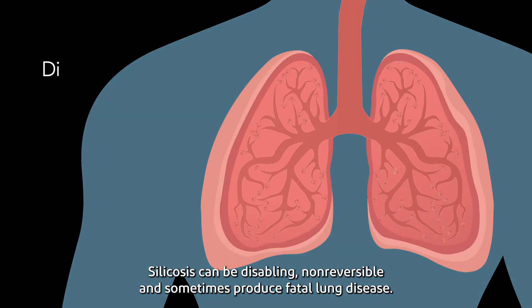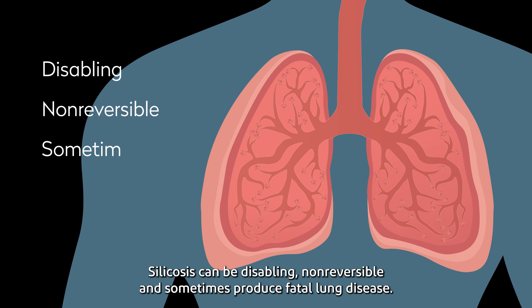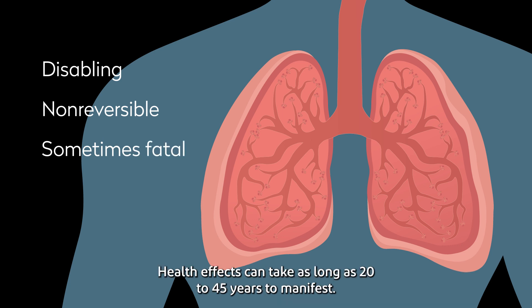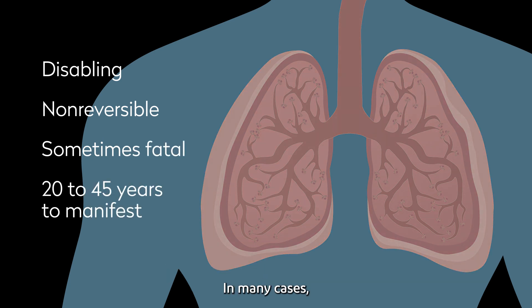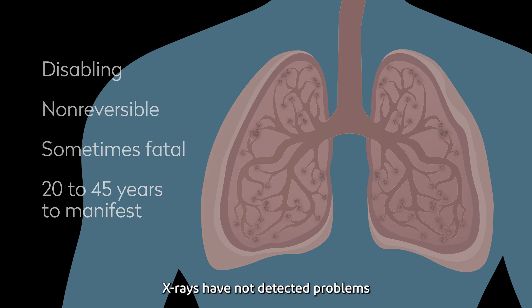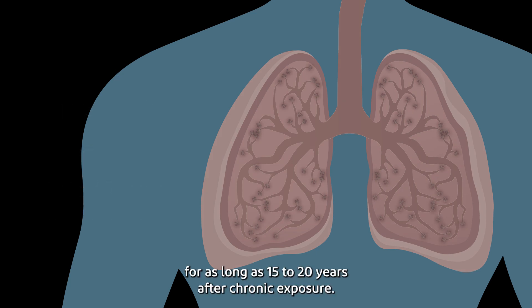Silicosis can be disabling, non-reversible, and sometimes produce fatal lung disease. Health effects can take as long as 20 to 45 years to manifest. In many cases, x-rays have not detected problems for as long as 15 to 20 years after chronic exposure.